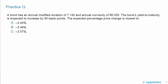One more practice question to finish this LOS. A bond has an annual modified duration of 7.14 and annual convexity of 66.2. The bond's yield to maturity is expected to increase by 50 basis points. The expected percentage price change is closest to: A) negative 3.4%, B) negative 3.49%, or C) negative 3.57%?